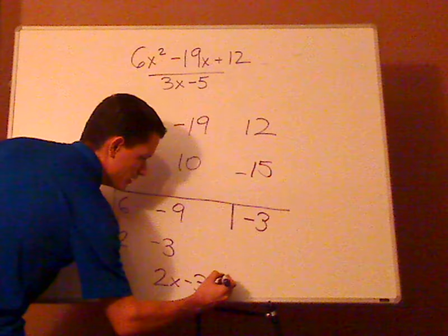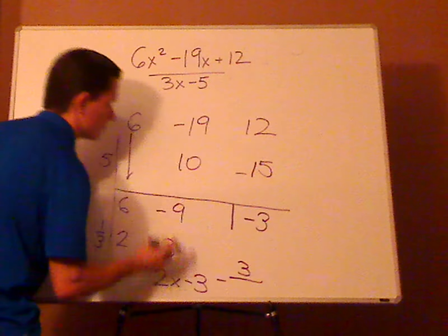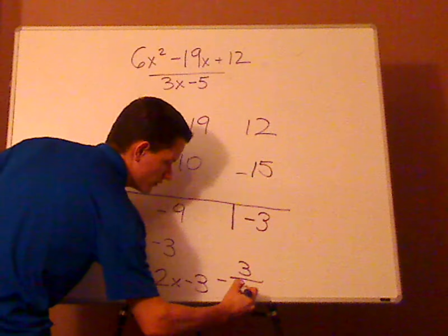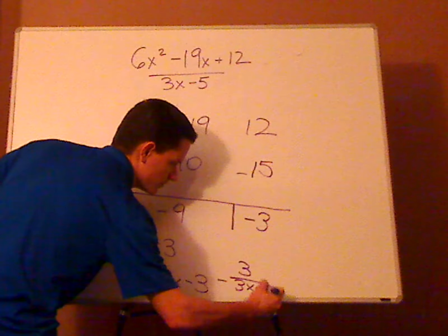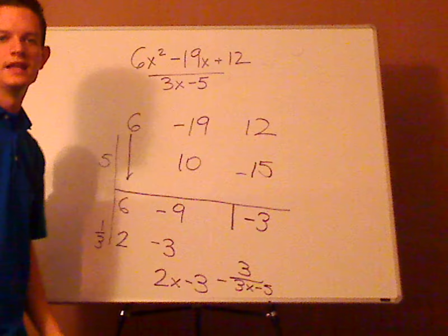So that would be minus 3 over your divisor, 3x minus 5. And that's it.